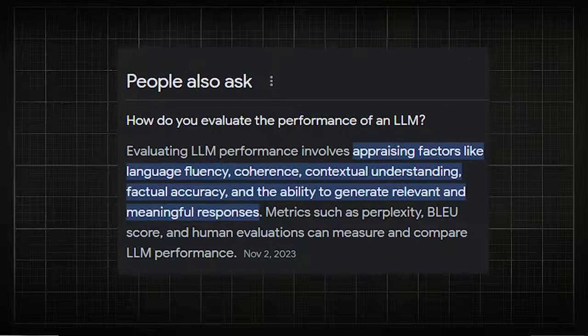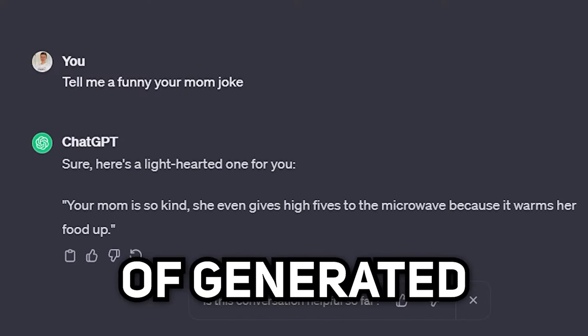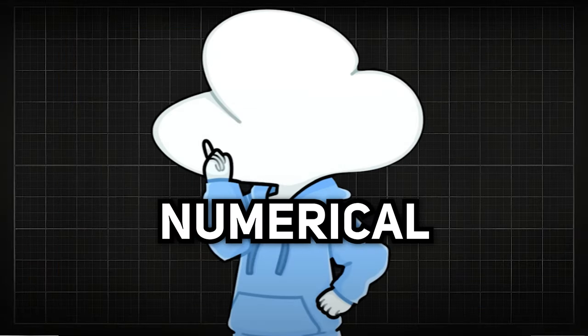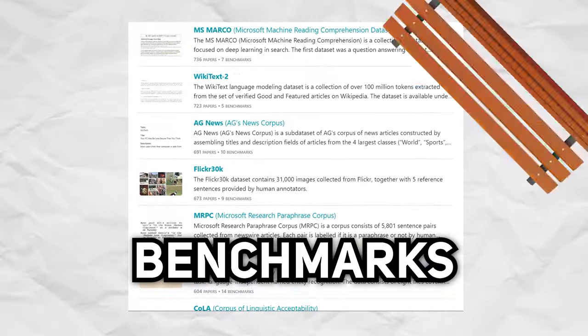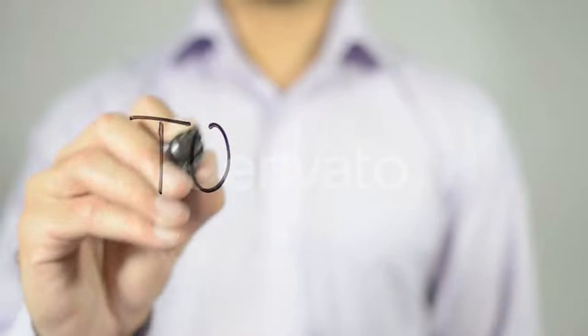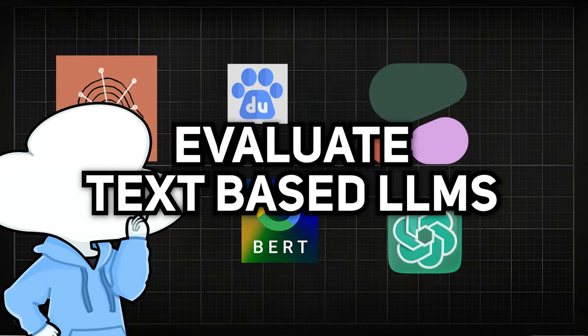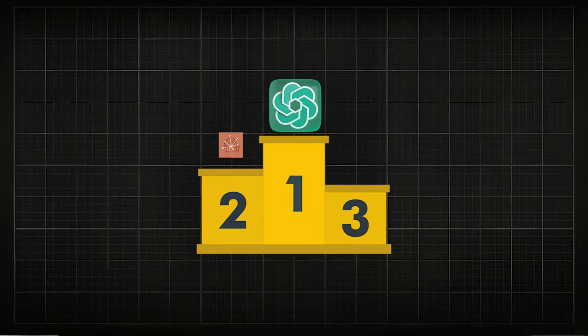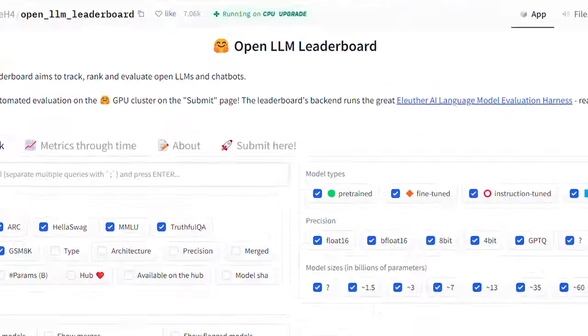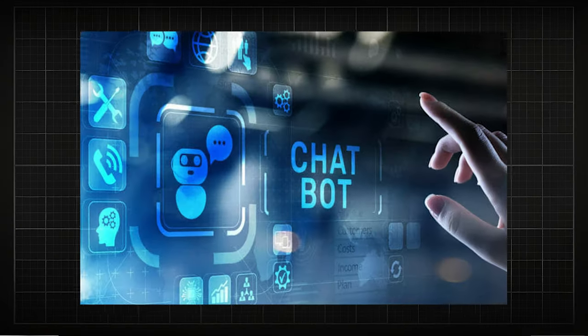It gets even more difficult because there are so many different aspects you can evaluate when given a piece of generated text, and it gets even worse when you want to quantify natural language into numerical metrics. That's why there exist hundreds of benchmarks just to figure out which AI model is superior. Today, you will learn about the current 7 most popular benchmarks used to evaluate text-based large language models, which are also used for ranking models on leaderboards like OpenLLM or Chatbot Arena. Keep in mind this is a different set of benchmarks when evaluating multi-modal LLMs and AI chatbots.